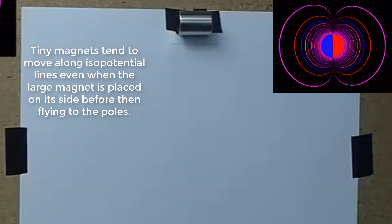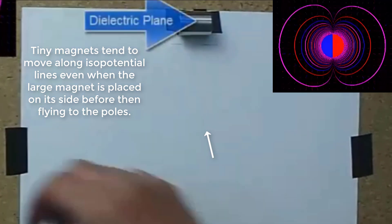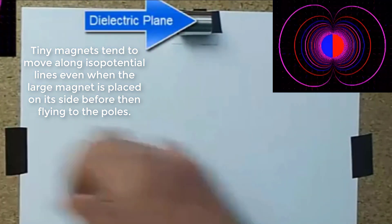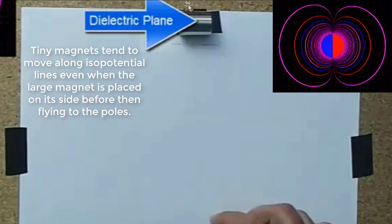Tiny magnets tend to move along isopotential lines even when the large magnet is placed on its side before then flying to the poles.